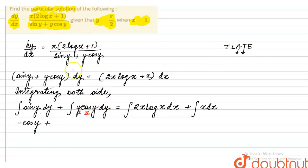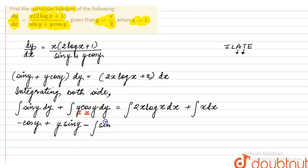Applying integration by parts: first function y times integration of cos y gives sin y, minus the whole integration of sin y times differentiation of the first function (which is 1) dy. On the right side, we identify first and second functions.